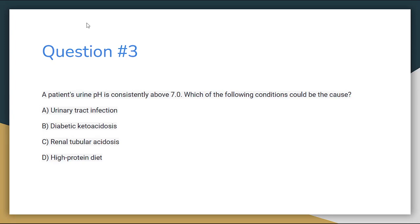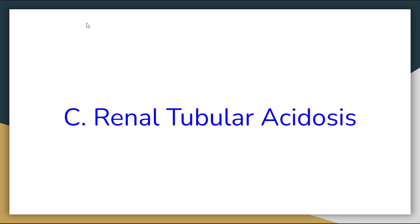Number 3. A patient's urine pH is consistently above 7.0. Which of the following conditions could be the cause? Letter A: Urinary tract infection. Letter B: Diabetic ketoacidosis. Letter C: Renal tubular acidosis. Or letter D: A high protein diet. The correct answer for number 3 is letter C, Renal tubular acidosis.